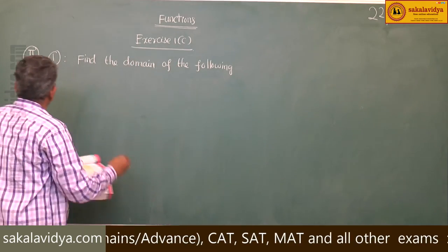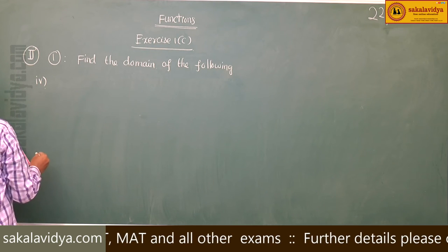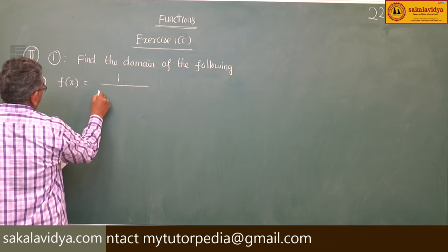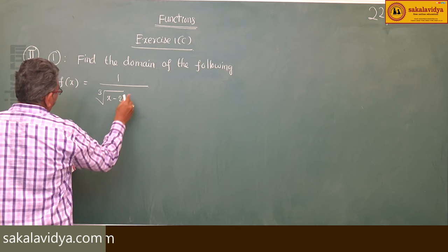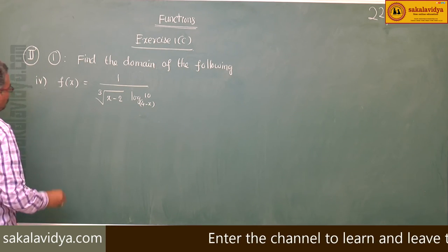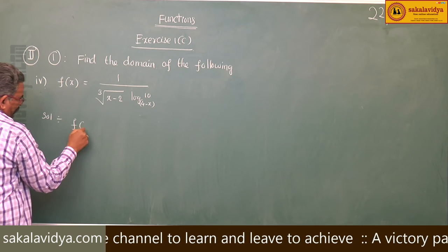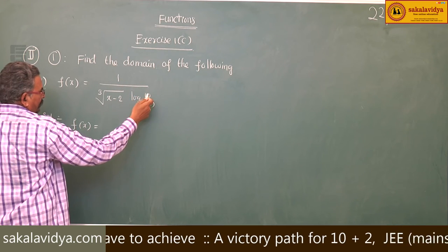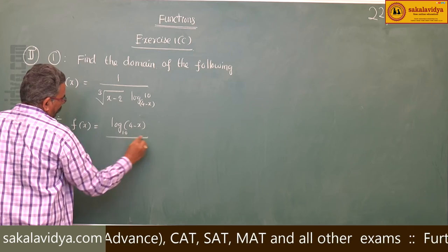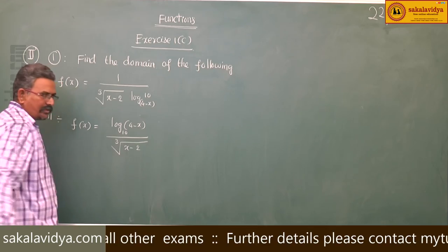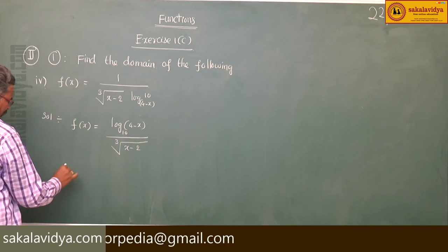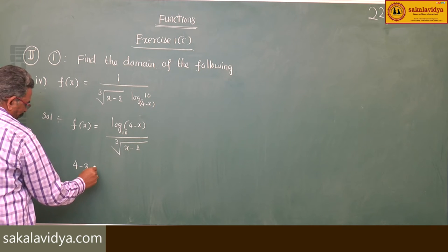Fourth problem: f(x) is equal to 1 divided by cube root of (x minus 2) times log base 10 of (4 minus x). This can be rewritten as f(x) equal to log of (4 minus x) to the base 10, divided by cube root of (x minus 2).